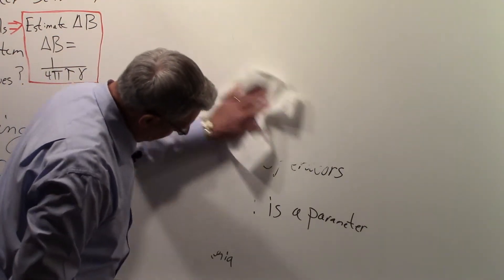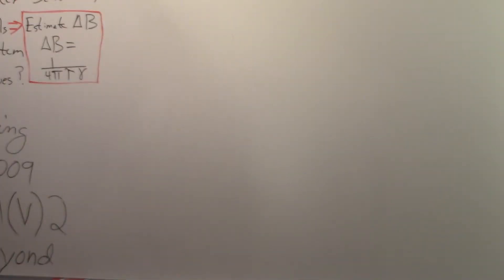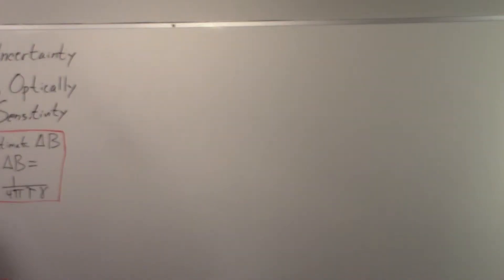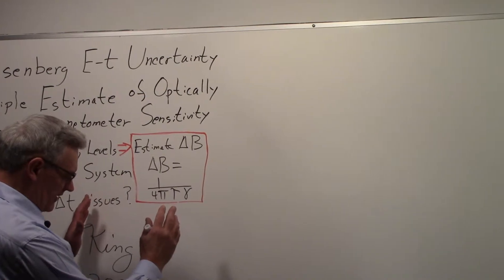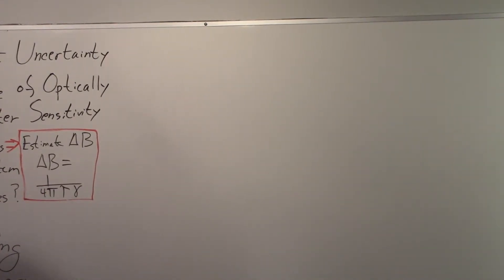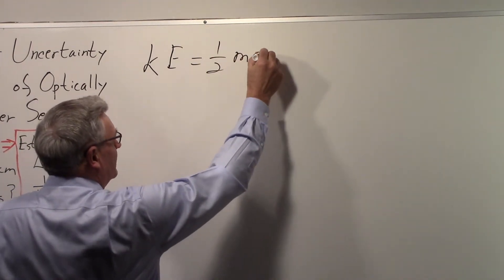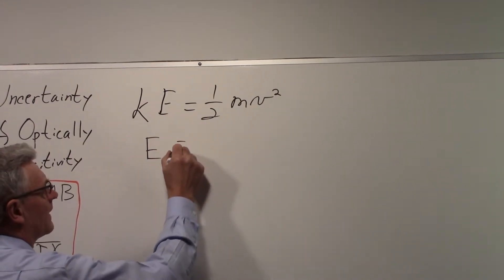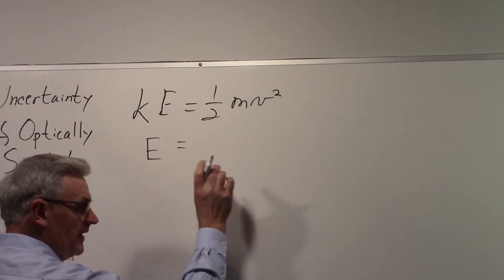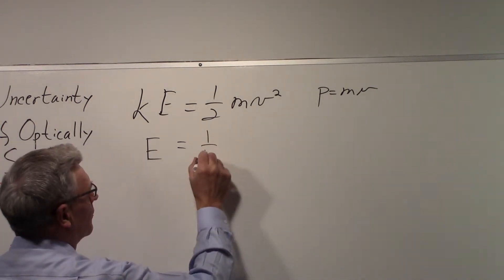We're looking for a justification for ΔE · Δt, because we used that with the optically pumped magnetometer to get the sensitivity. Imagine a wave packet moving along and we ask: what is the change in energy as the wave packet passes some spot? We start with kinetic energy E = ½mv², and since we're in a quantum mechanical sense we write this in terms of momentum — p = mv — giving E = p²/2m.